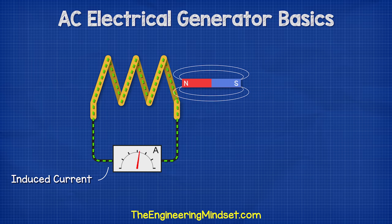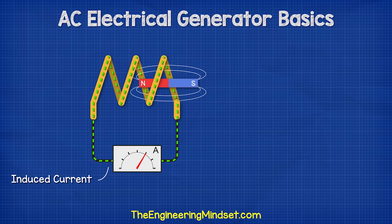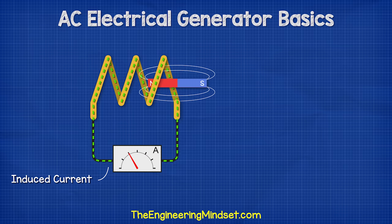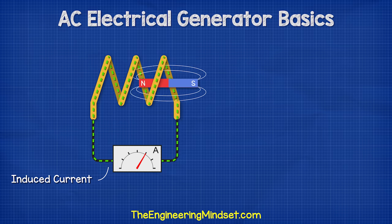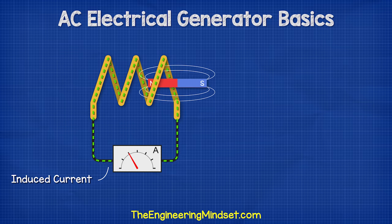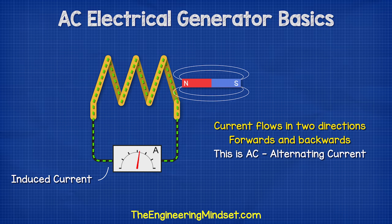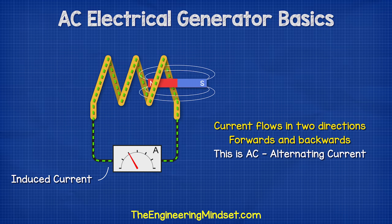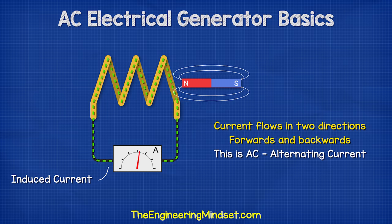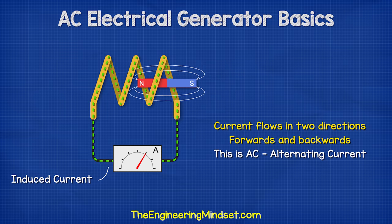If we move the magnet in and out repeatedly, the current will alternate between flowing forwards and backwards. This is how AC or alternating current is generated — the current is continuously alternating in direction.